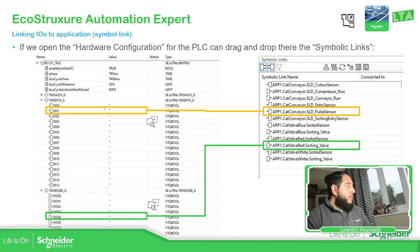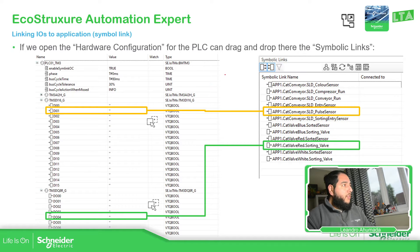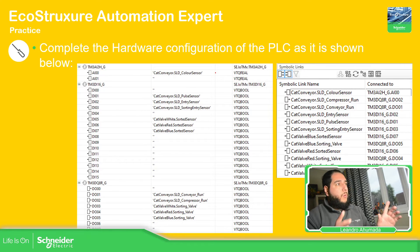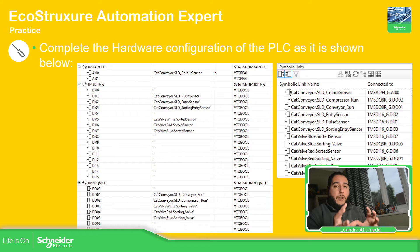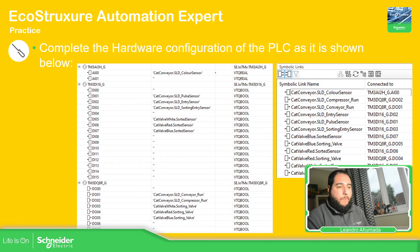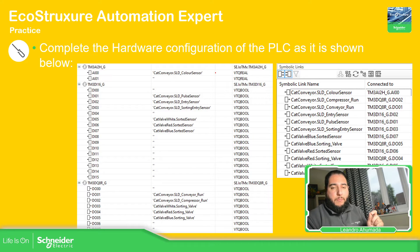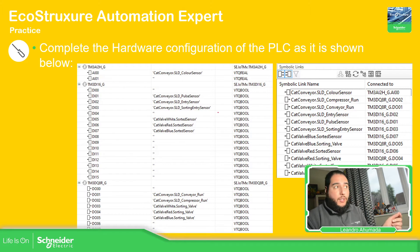And then we just drag and drop where we think the IO is going to be. Simple as that. So what we need to do is match it based on the information that we have for our sorting line — the pinouts and everything. We need to match it over here.